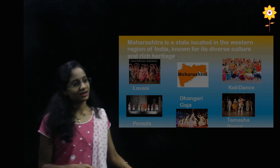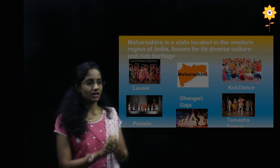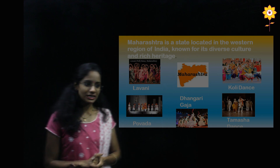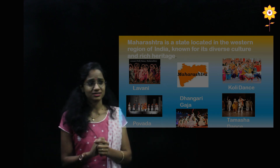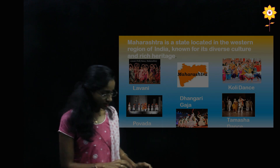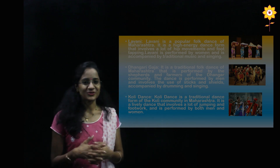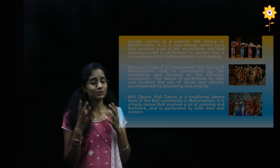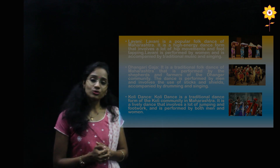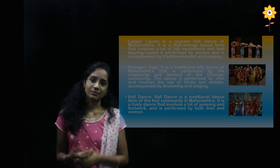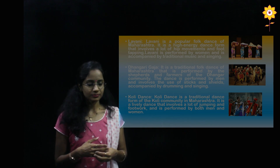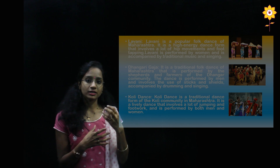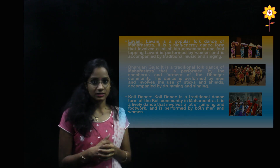Coming to Maharashtra — located in western India, it is known for its rich culture and heritage. The folk dances of Maharashtra are Lavani, Kohli, Powada, Dhangari Gajha, and Tamasha. Lavani is a popular, high-energy dance form involving a lot of hip movements and foot tapping, performed by women accompanied by traditional music and singing. Even within Lavani there are different types and aspects to explore in depth.